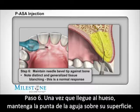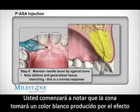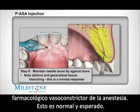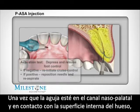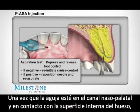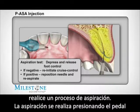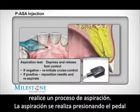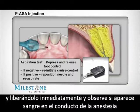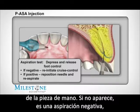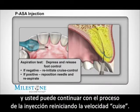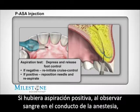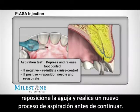Step 6: Maintain the needle bevel against the surface of bone once it's contacted. You should begin to notice distinct blanching of the palatal tissue as an effect of the vasoconstrictor in the local anesthetic — this is normal and to be expected. Once the needle is within the nasopalatine canal and contacting the inner bony wall, perform an aspiration test. Depress and release the foot pedal and observe if any blood appears in the hub or tubing. If not, this is a negative aspiration and you may continue the injection by re-initiating cruise control. If there was a positive aspiration, reposition the needle and re-aspirate before continuing.